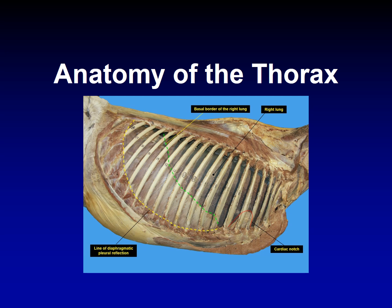This is another view of the thoracic cavity containing the lungs and the bronchi. We can see the notches here at the level of the 3rd and 4th intercostal spaces, whereas the basal border of the lung is at the level of the 6th, 11th, and 16th intercostal spaces. The line of pleural reflection is between the 7th and the 17th intercostal spaces in a very smooth line, as shown in this dissection.